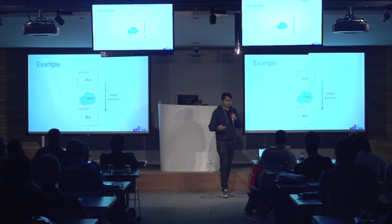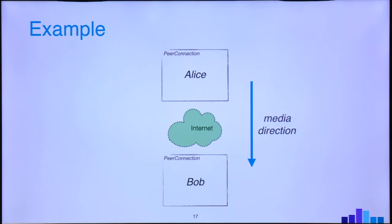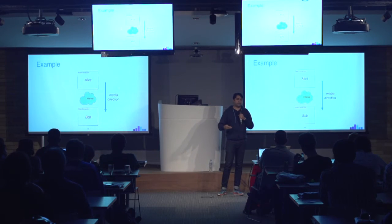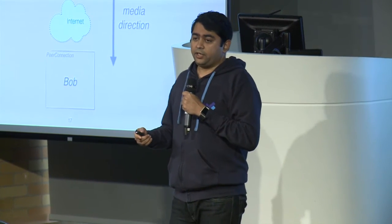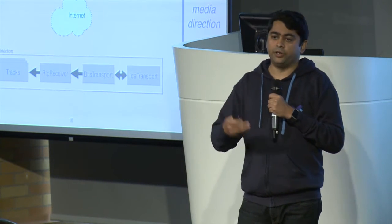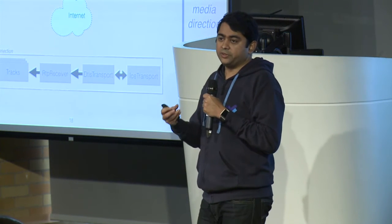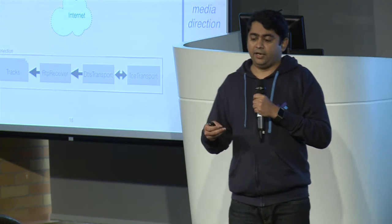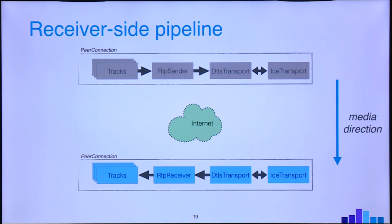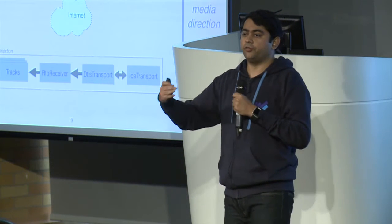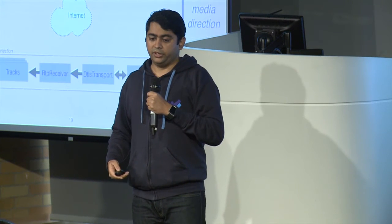Another way of looking at metrics: there is media flowing between Alice and Bob. For simplicity I'm only showing media in one direction. You can gather statistics across the pipeline. At the sender side, there are audio-video tracks put into an RTP sender, which sends the data over the network through an ICE transport. At the receiver side, the data is received on the ICE transport and given to the RTP receiver, where it depacketizes it and sends it to the right track. In most cases, you can call GetStats on all these objects to get accurate information related to that particular stream.